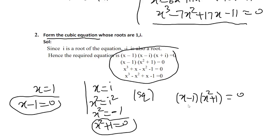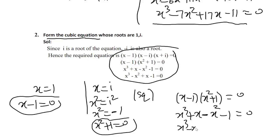Expanding: x³ plus x minus x² minus 1 equals 0, which gives the cubic equation x³ minus x² plus x minus 1 equals 0. This is the required equation for the given problem.